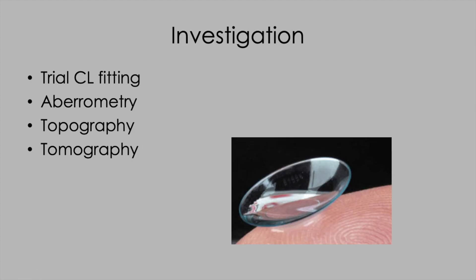How do we make the diagnosis? The key investigation is trial contact lens fitting. If somebody has poor vision in spectacles but good vision once a rigid gas permeable lens is in place neutralising the corneal surface irregularity, then the diagnosis is irregular astigmatism. Other investigations that are very helpful in planning treatment are aberrometry, topography, OCT, and segmental tomography.